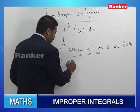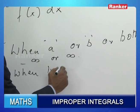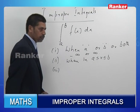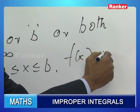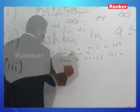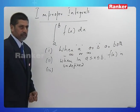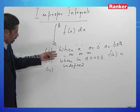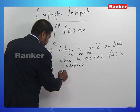Secondly, when in the interval a ≤ x ≤ b, f(x) is undefined, then we say this is a Type 2 improper integral. And a combination of both these things is called a Type 3 improper integral.